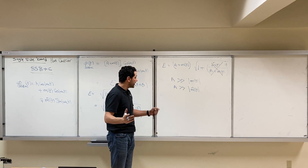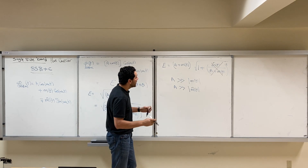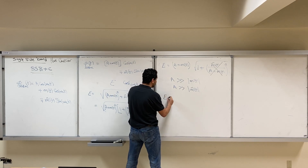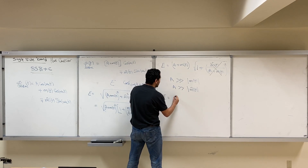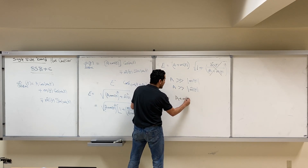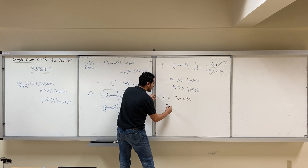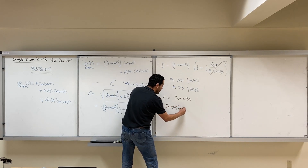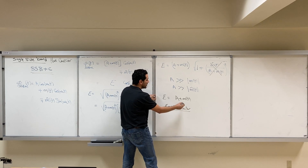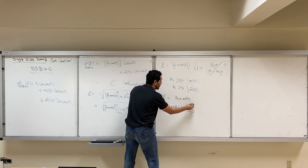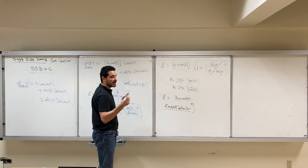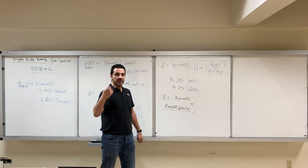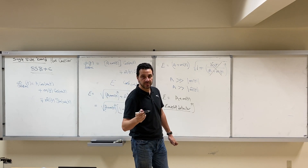If we choose A very large, much greater than M(t) and M̂(t), then that second term inside the square root can be approximated as zero. In this case, the envelope of our signal will be approximately A + M(t). If we use an envelope detector, we will detect A + M(t), and then we can use a DC blocker to remove A and recover M(t).